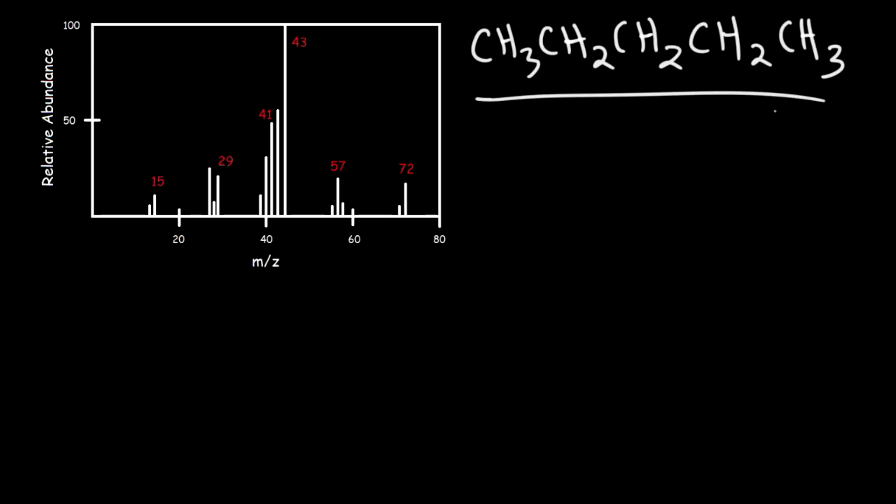Put it in a mass spectrometer and what's going to happen is that sample is going to be vaporized and then it's going to be ionized using an electron beam. When it ionizes it can fragment into radicals and cations, but only the positively charged ions will make it through the analyzer and reach the detector.